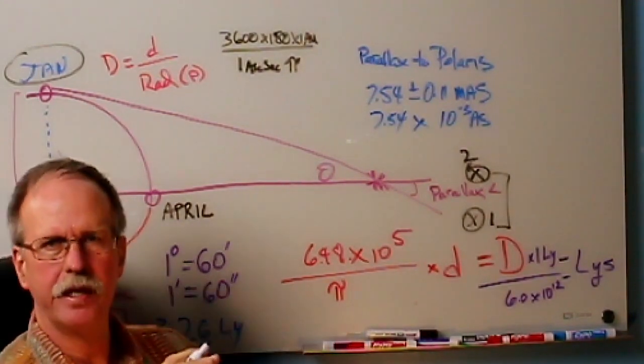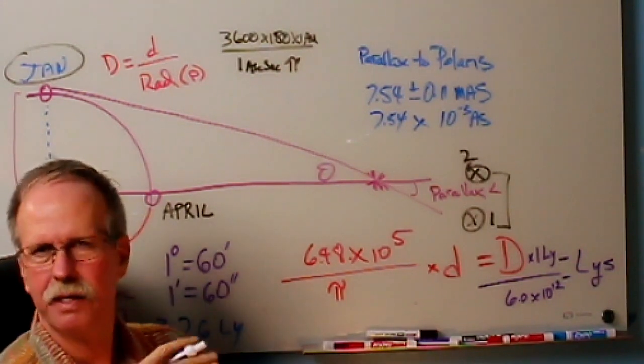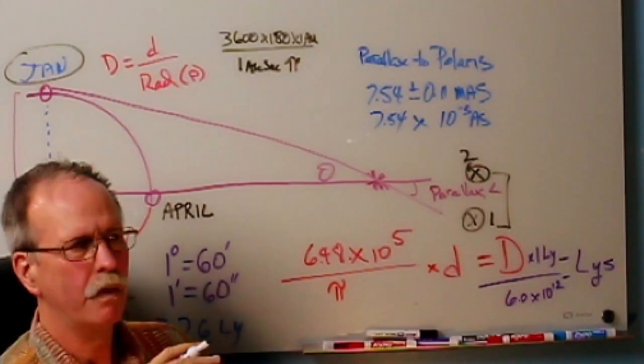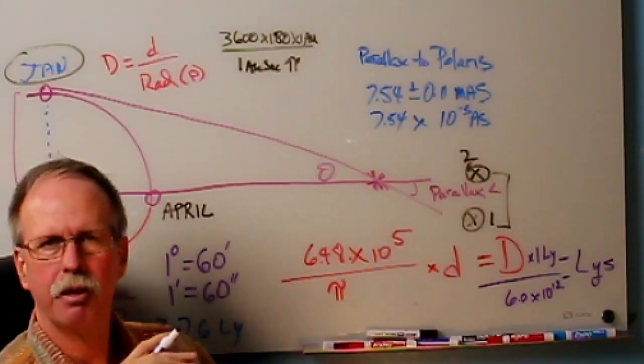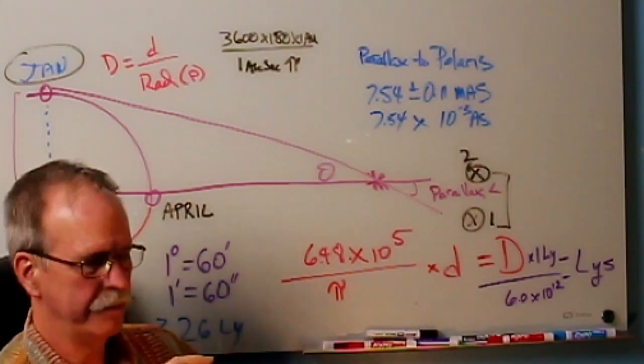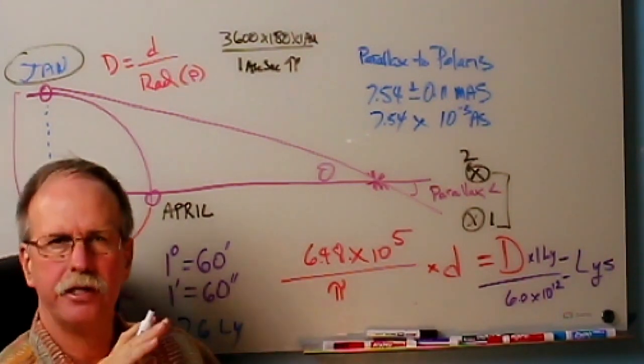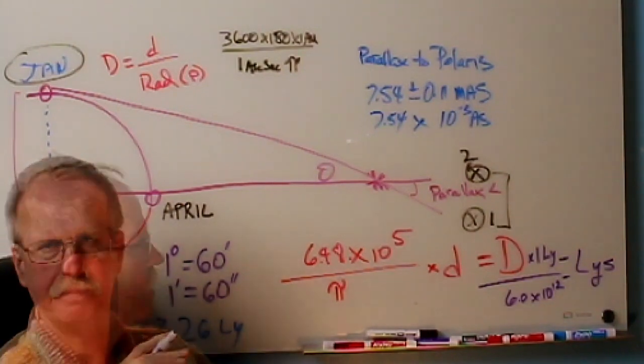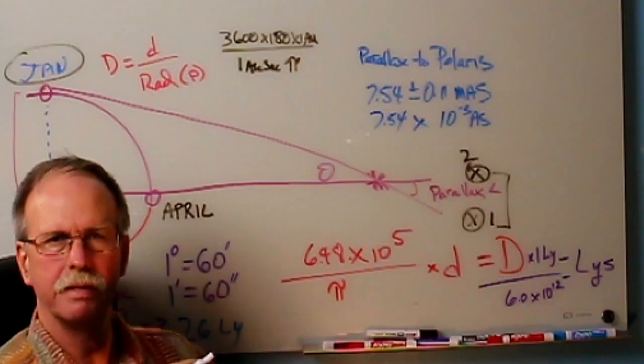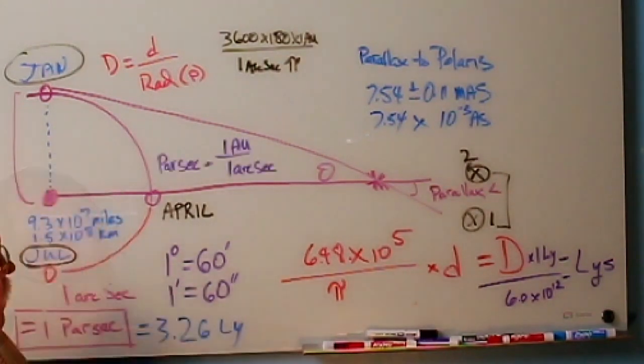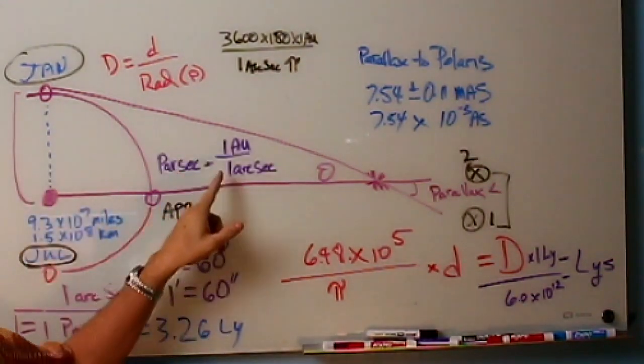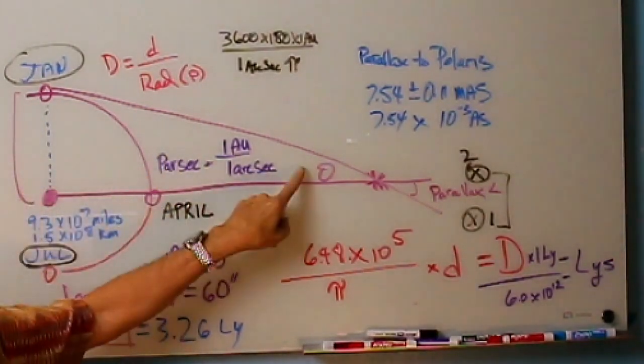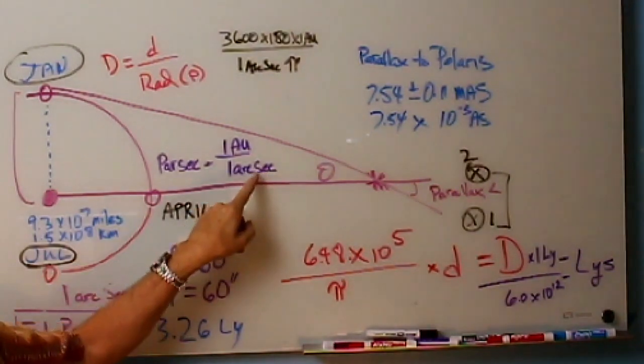Now the next thing that we need to understand is how do we measure these angles? Are they in degrees? No, they're really not. What we do is we measure them in something called radians, and let's go over that in just a second. But first, I want to introduce a new measurement of distance, and that's called the parsec. And it was set up specifically to deal with parallax calculations. Now what a parsec is, is a base of one astronomical unit over a parallax angle of one arc second.